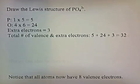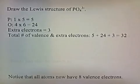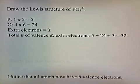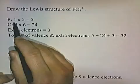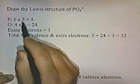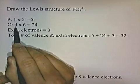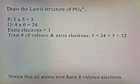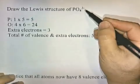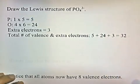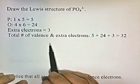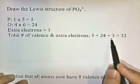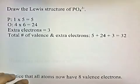Draw the Lewis structure of phosphate, PO4 with a negative 3 charge. Phosphorus is one atom in group 5, contributing 5 electrons. Four oxygens, each contributing 6 valence electrons, gives 24. The negative 3 charge means there are 3 extra electrons. So the total number of valence electrons is 5 plus 24 plus 3, which gives 32.